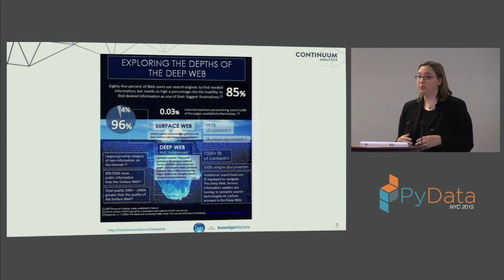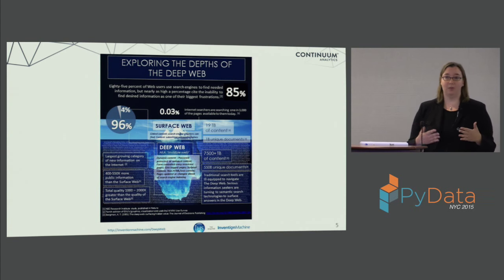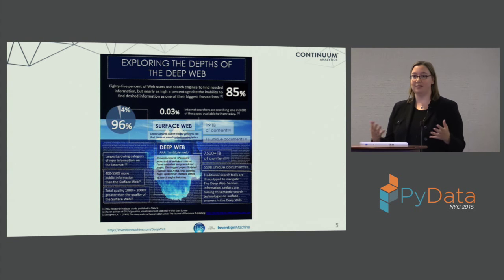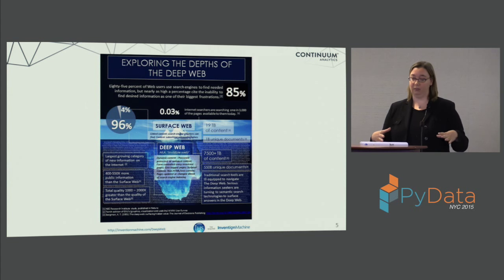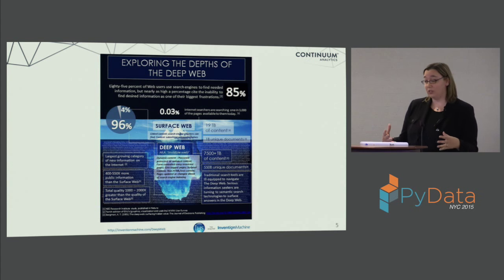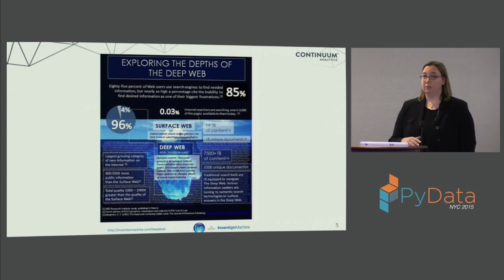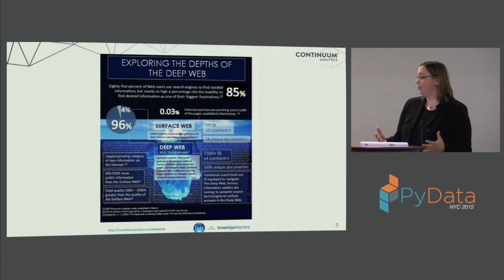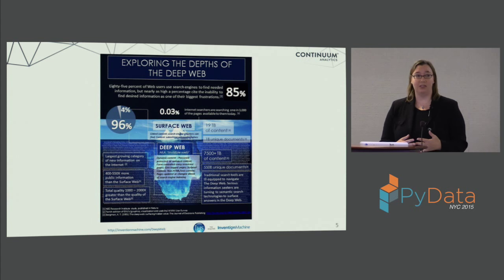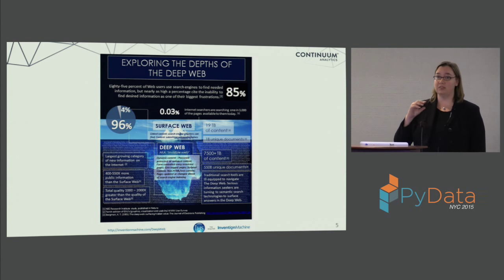I also want to make the distinction between the deep web and the dark web. The dark web is where you have to use Tor sites, Onion sites — you have to use a Tor browser to go into that anonymized part of the Internet. I'm going to focus mostly on the deep web, using normal Internet protocols where we're talking about information that's publicly available but just below the surface. What makes it special is the visibility — it's not readily available to us.